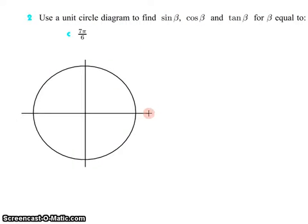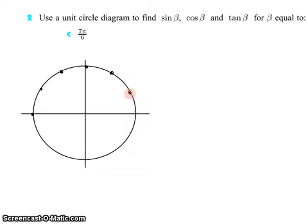Now we're dealing with 7π/6, which is more than π. This is π and 1π/6. So we're going to go 7π/6 all the way around. Pi is all the way out here — that's half a rotation. So we want to divide pi into sixths: 1π/6, 2π/6, 3π/6, 4π/6, 5π/6, 6π/6, and here is 7π/6.